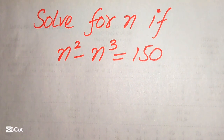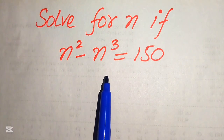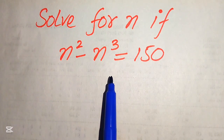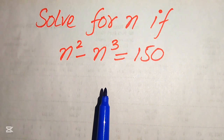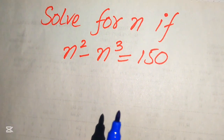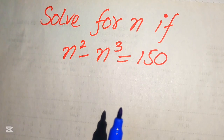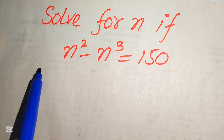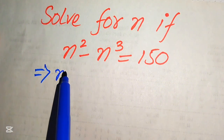Hello everyone, welcome. We solve this nice pre-algebra problem: n squared minus n cubed equals 150. We solve for the values of n. I hope you like this method, but if you have any other method in mind, please don't hesitate to write it in the comment section.